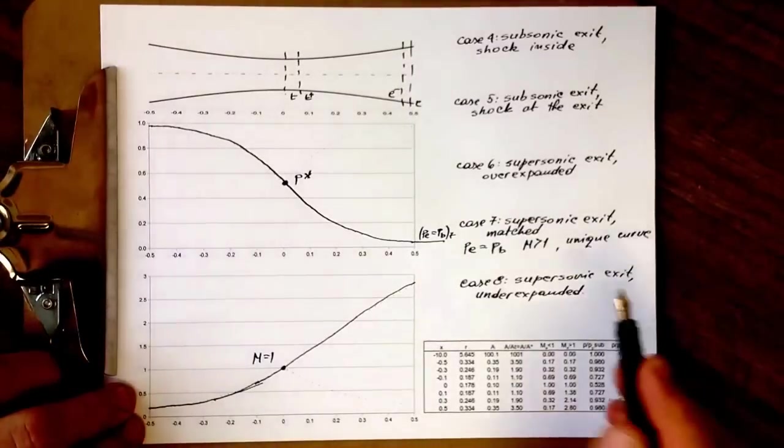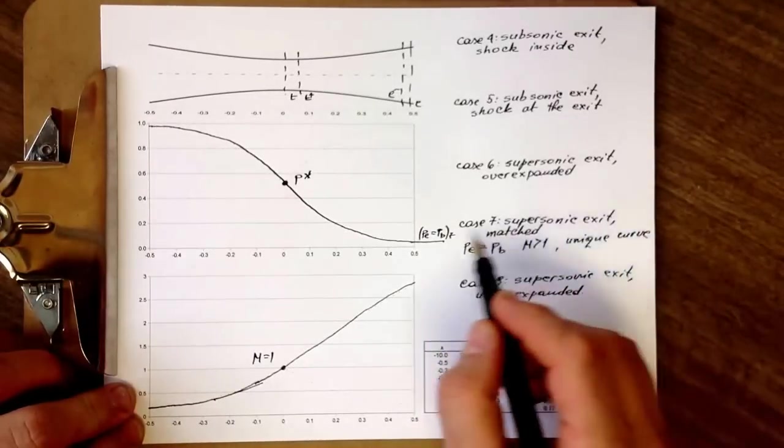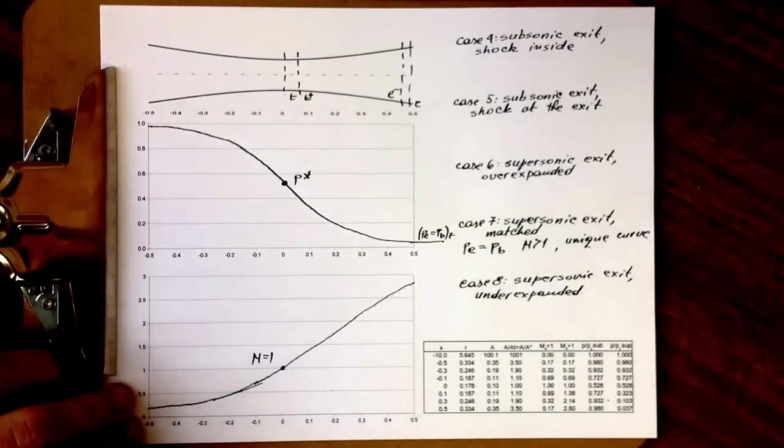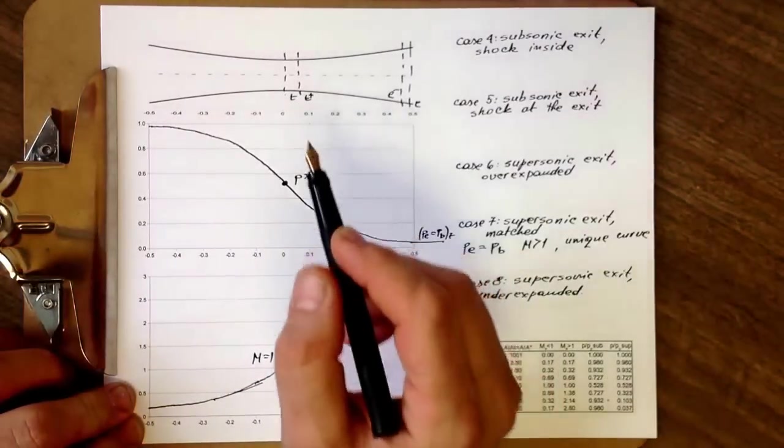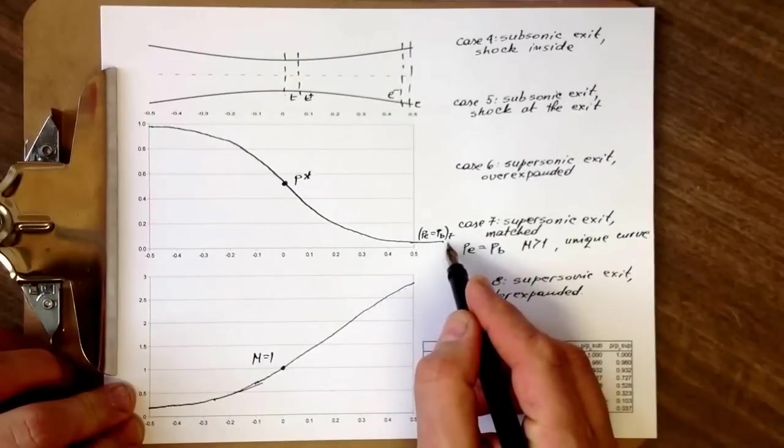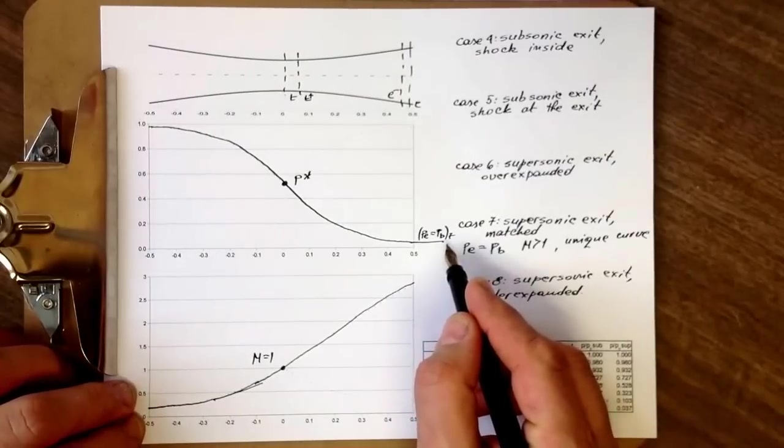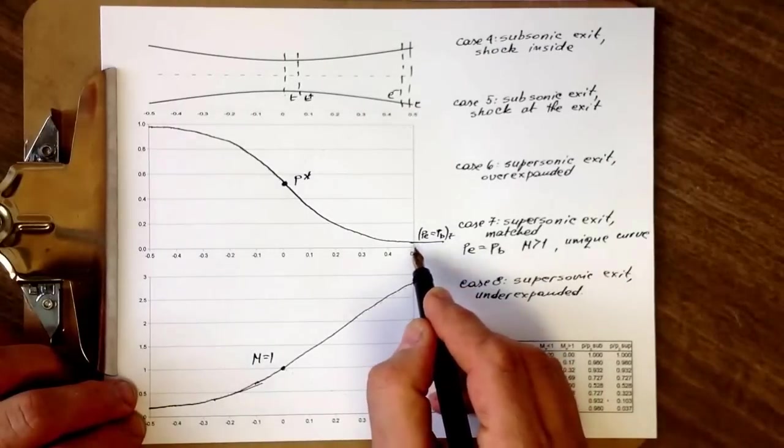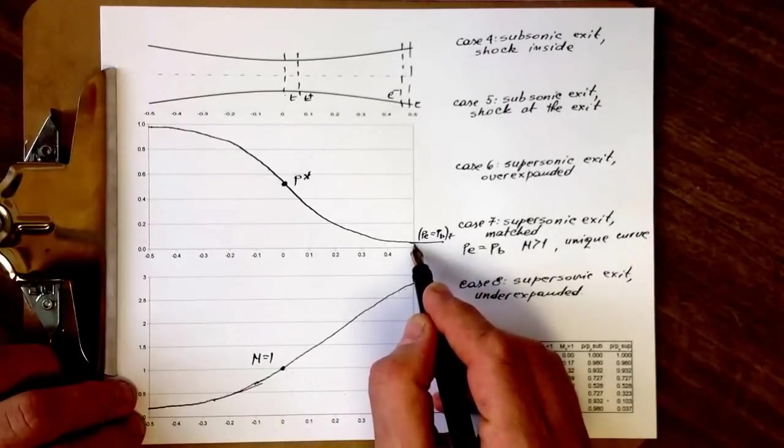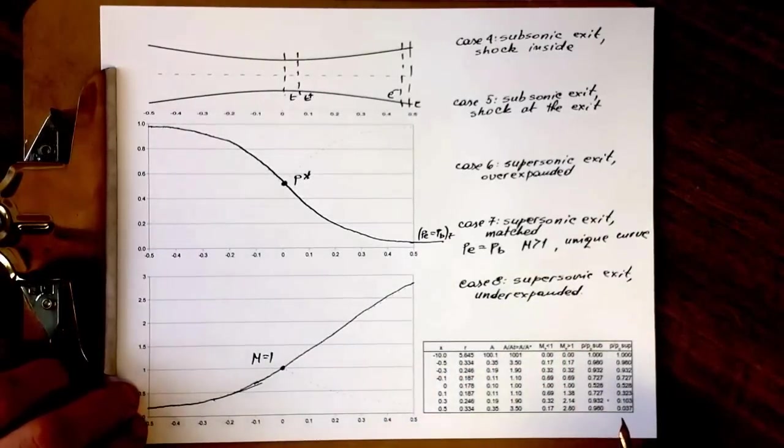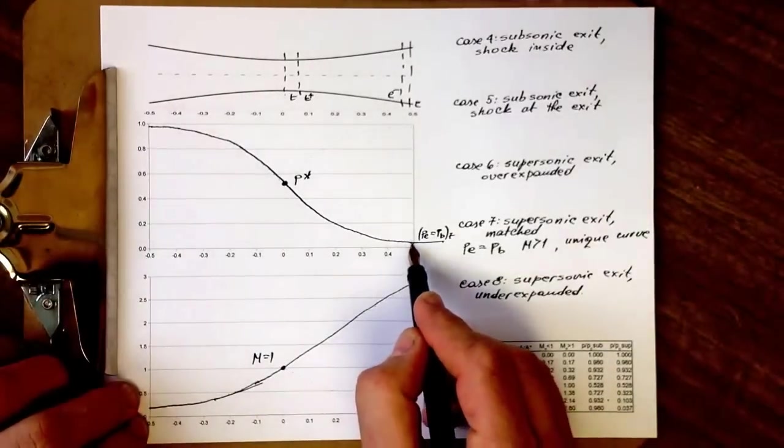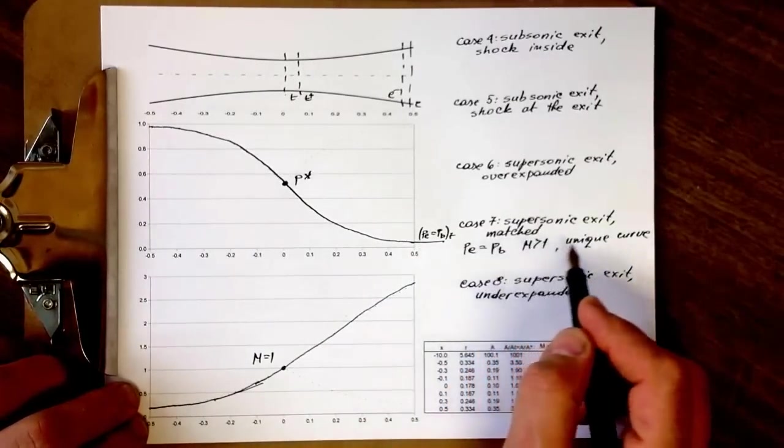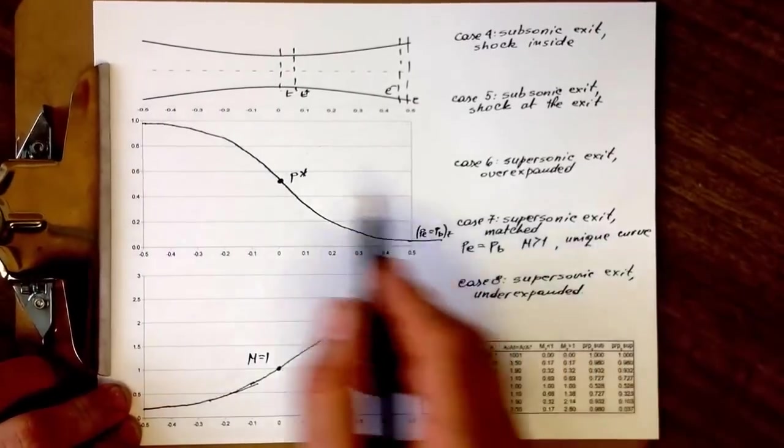We're starting with case seven. Case seven is supersonic exit matched. What does that mean? That basically means the back pressure is exactly equal to the pressure that would correspond to the supersonic exit pressure at the end of the nozzle. Given that this is isentropic flow, there's no shock in this particular regime.